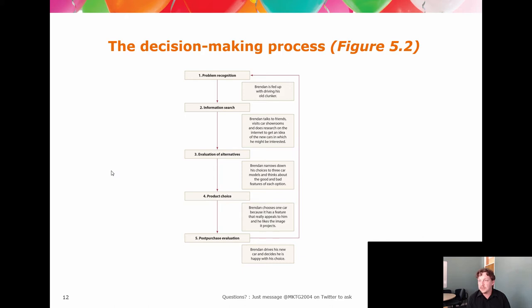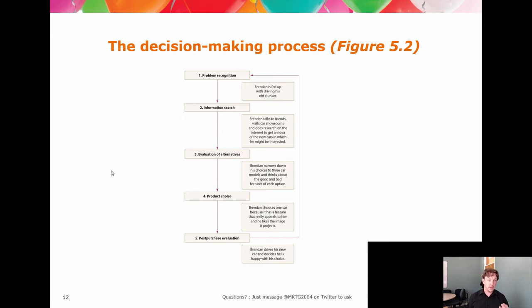Bringing us to a specific focus: the decision-making process. This is one of the big models. The decision-making process diagram says we move through stages — it's a very linear model, though we believe it's less linear and you can loop between stages. The basic model says: there is a problem, you recognise it, you try to understand how to solve it, you give yourself a series of choices, you make one of those choices, then you evaluate how happy you are with your choice.